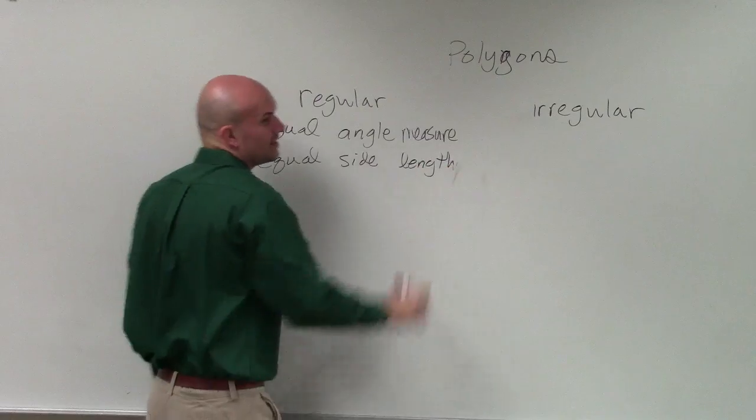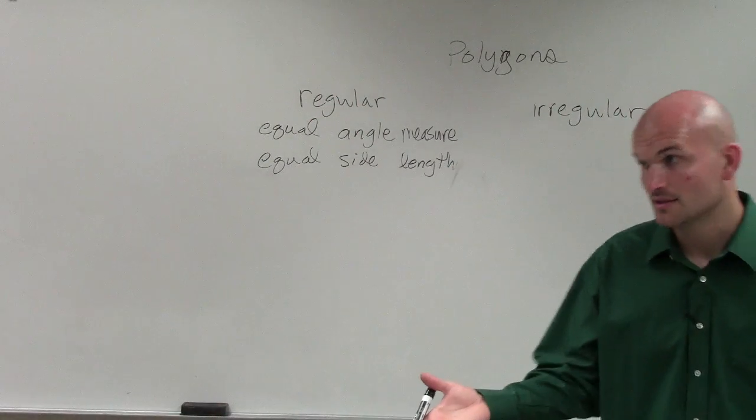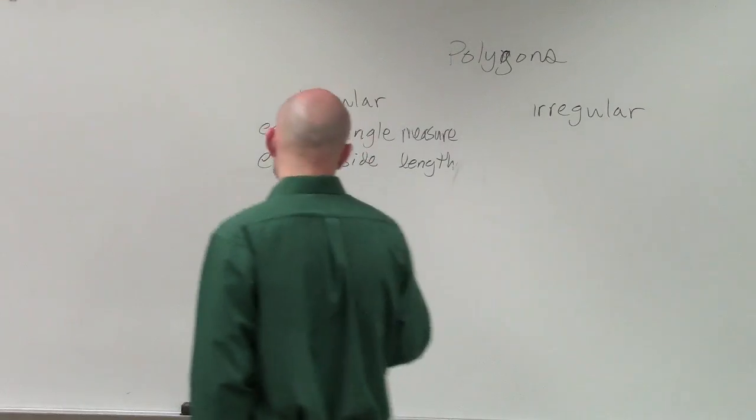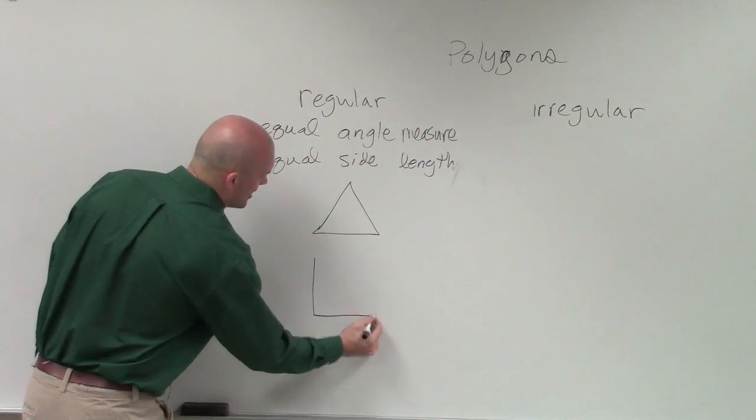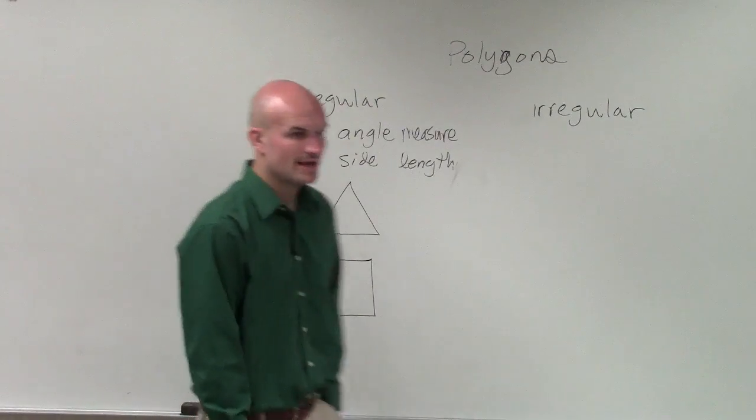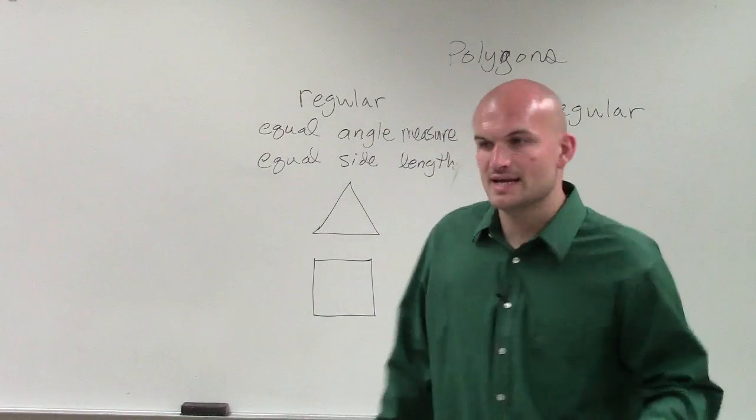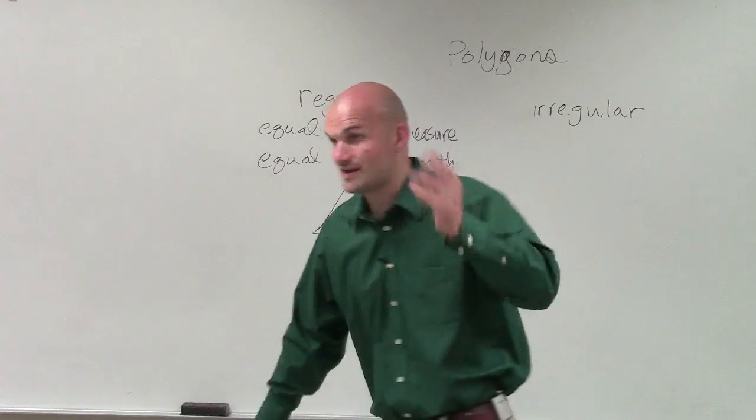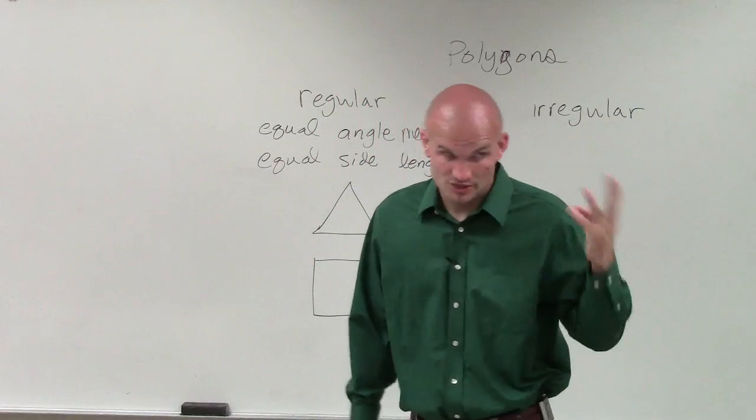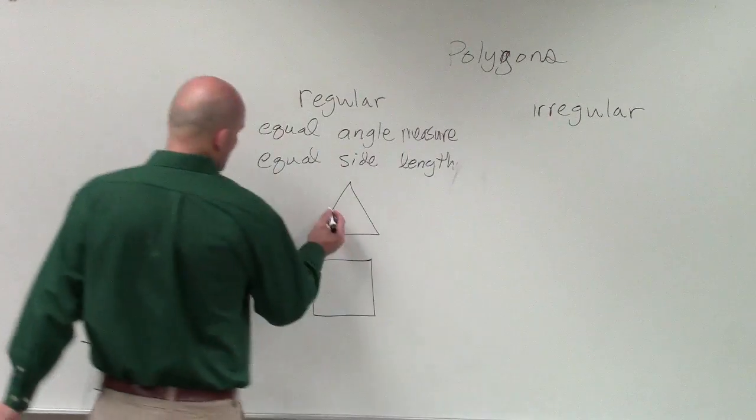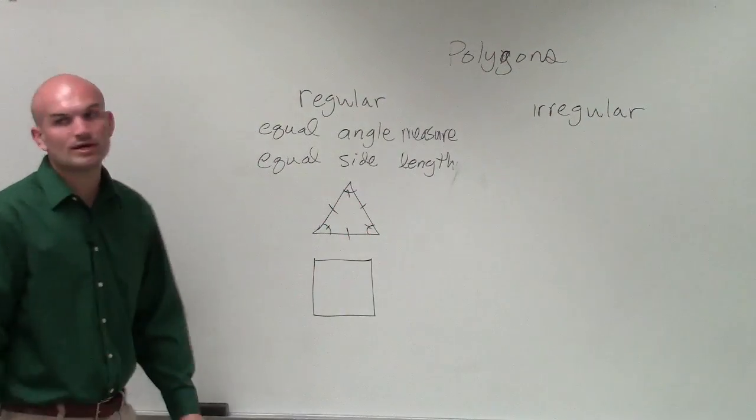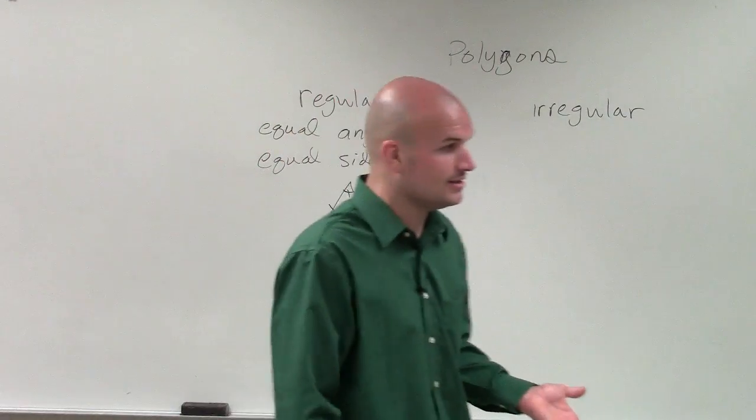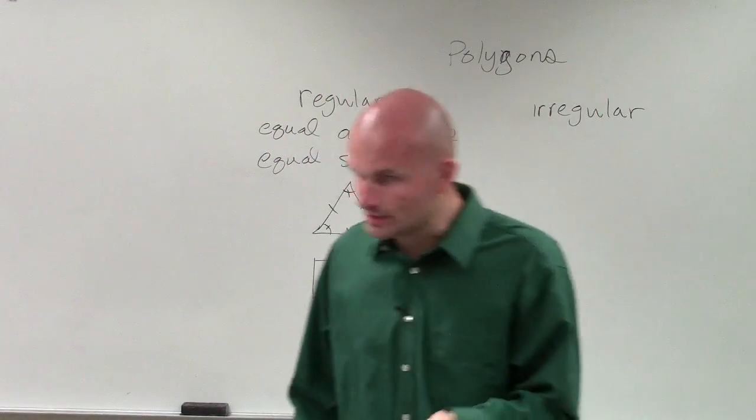So two famous ones that we talked about is a triangle and a square. Because remember, if we say I'm talking about a triangle, all a triangle has to have is three sides. However, if a triangle has three sides and three angles that are all equal, we call that an equilateral triangle. But there's more types of triangles than just equilateral.